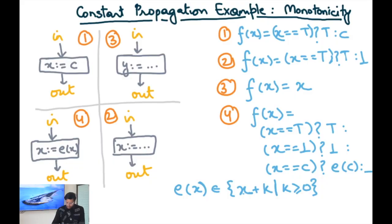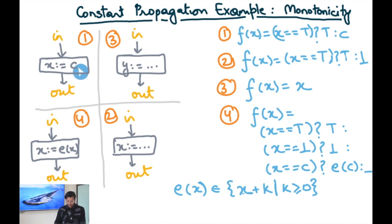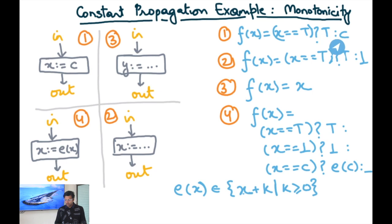We're going to look at the constant propagation example and its transfer functions to check whether they are monotonic or not. For the constant propagation example, one formulation involved four transfer functions. The first was across the statement assigning a constant to variable x, where if the input value is top then the output is also top, otherwise it is the constant c being assigned.